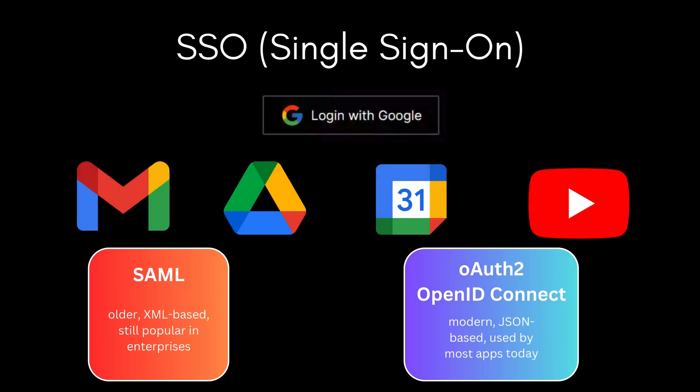Next: Single Sign-On, or SSO. SSO means one login, multiple services. Log into Google once, and suddenly you can access Gmail, Drive, Calendar, YouTube, and more without logging in again. Behind the scenes, SSO uses identity protocols like SAML on older systems, but still popular in enterprises, and OAuth2 with OpenID Connect in modern software, used by most apps today.